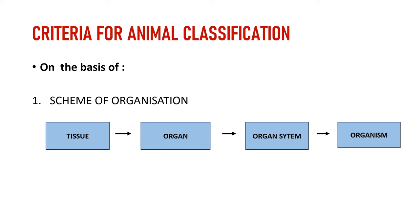Tissues compile up to form an organ. An organ like the stomach has epithelial tissue, connective tissue, and muscular tissue. These organs then form the organ system — for example, the digestive system, respiratory system, excretory system, and various other types of systems.